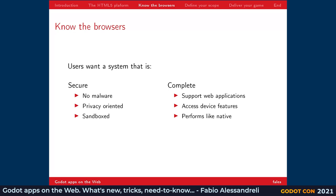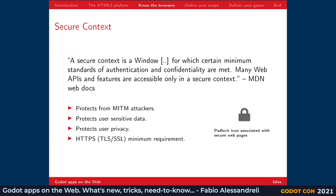Applications should also be sandboxed, which means every application running inside the browser should be completely isolated from the others and from the underlying operating system itself, to preserve things like credentials and sensitive data. But they also want a system that is complete, meaning it should support full web applications, and they expect them to be able to access device features like accelerometers on the phone to geolocation data and so on. Many web APIs and features are only accessible in a secure context — for example, access to gamepad or some audio features.